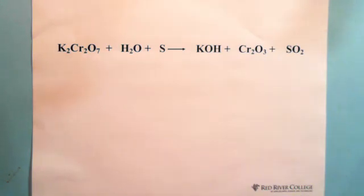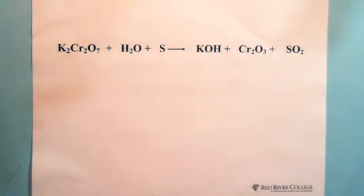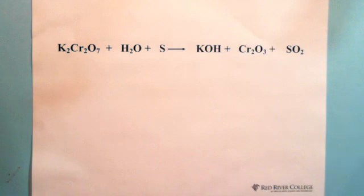So this is the equation we try to balance. This one is K₂Cr₂O₇ — the name is potassium dichromate — and it reacts with water and sulfur to produce potassium hydroxide, chromium-3 oxide, and sulfur dioxide.